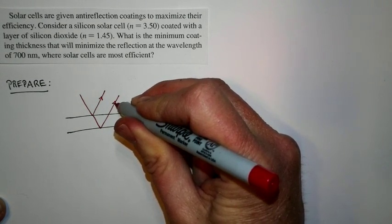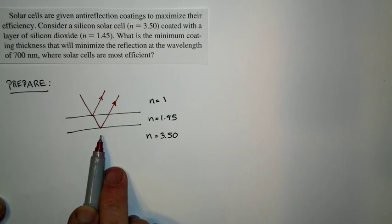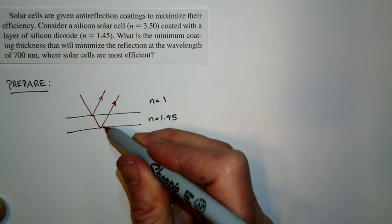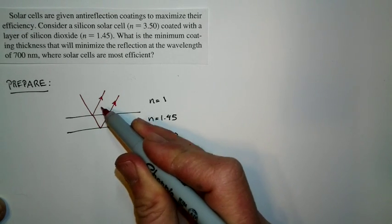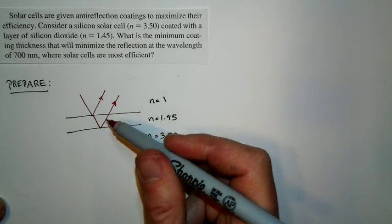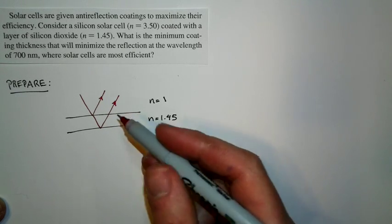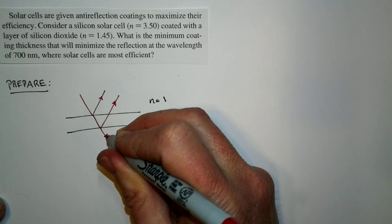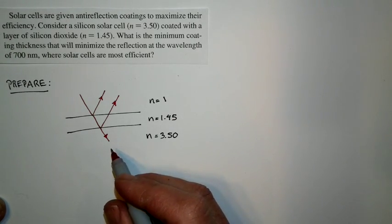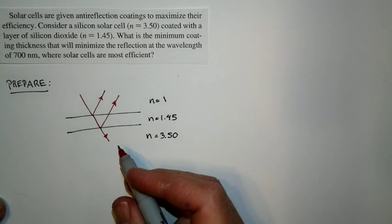Now the ray that reflects from this surface, or the light that reflects from this surface, can interfere with the light from this surface. And we want these two to destructively interfere because then I won't get the reflection, and instead of getting the reflection, I'll get what I want, which is transmission into the solar cell so that these photons can be absorbed and be used by the solar cell. That's what I'm looking for here.